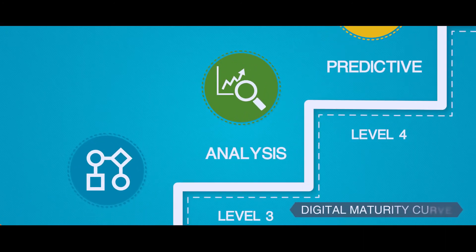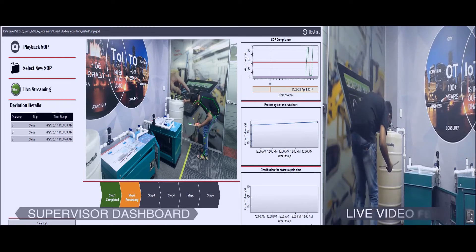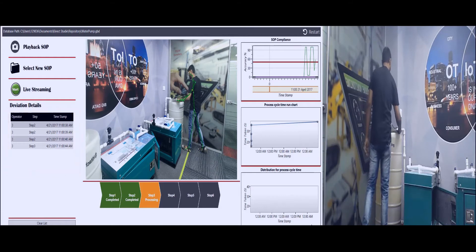Analytics, the next level on the digital maturity curve, is leveraged by the line supervisor through imaging to identify process deviations that can cause defects.